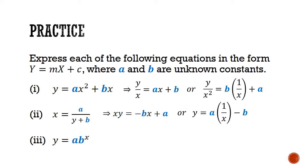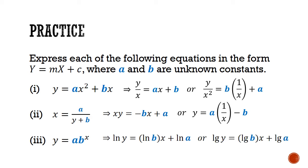For part three, we have y equals a times b to the power of x. Taking natural log on both sides and rearranging gives big Y of ln y, big X of x, gradient of ln b, and big Y intercept of ln a. Of course, you could also take log base 10 to get an alternative answer.